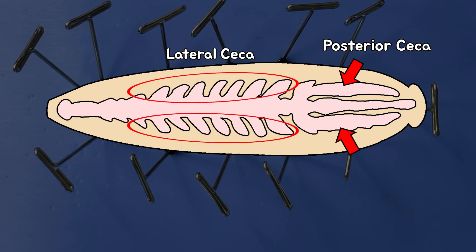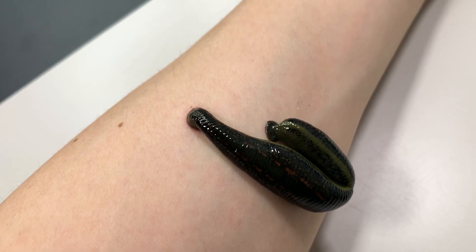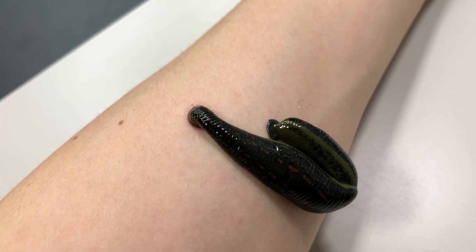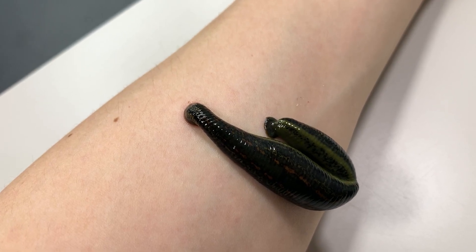The consumed blood can be stored in the lateral and posterior ceca, allowing them to survive for up to a year without eating anything after a proper blood meal. Impressive, isn't it?